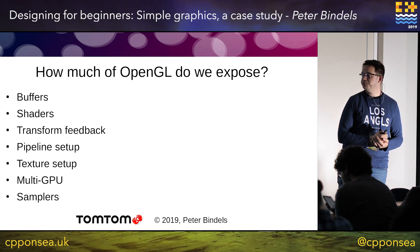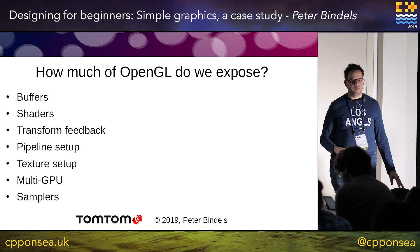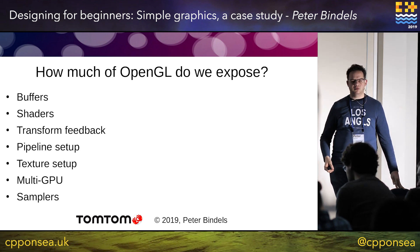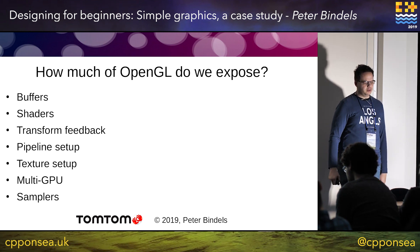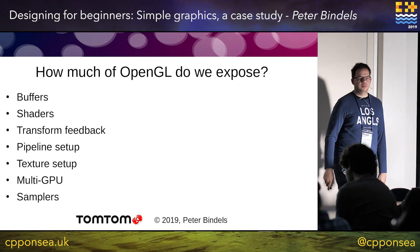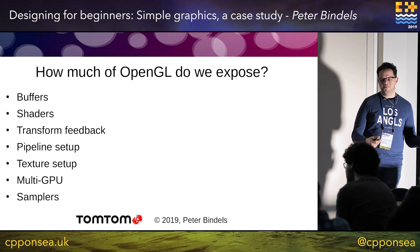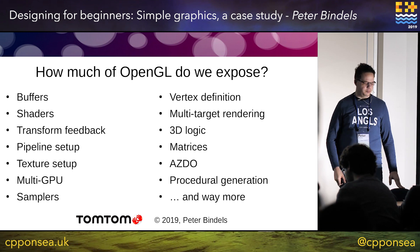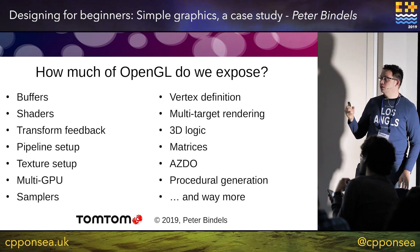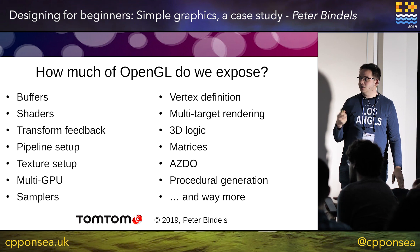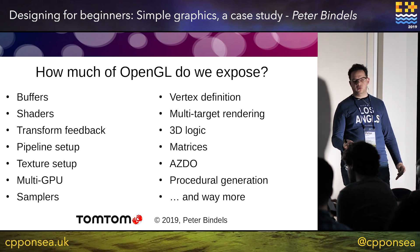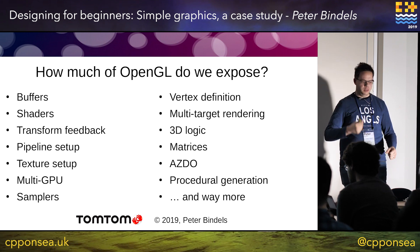So how much OpenGL do we use? Do we need transform feedback? Do we even care? Pipeline setups? Texture setups? Multi-GPU setups? Probably useless. Do we need samplers? Do we want to explain the difference between a sampler and a texture? No. On the other side: vertex definitions, render to multi-targets for 3D glasses — cool but lots more complication. We're not doing 3D. Or maybe we are — but then we have matrices, vertices, 3D transforms, and 'you drew everything correctly but it's behind you.' Maybe we want procedural generation so you can have an automatically generated world.